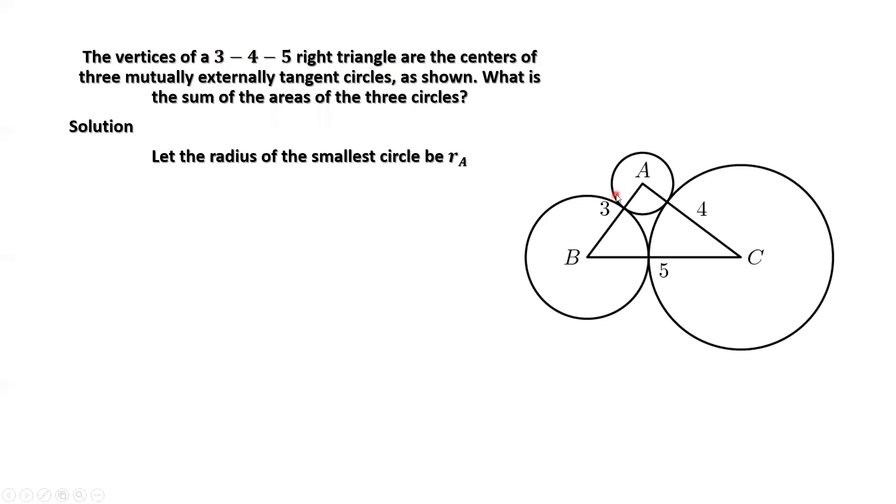Let's define the radius of the smallest circle as RA. The second largest circle, RB. The radius of the largest circle, RC.